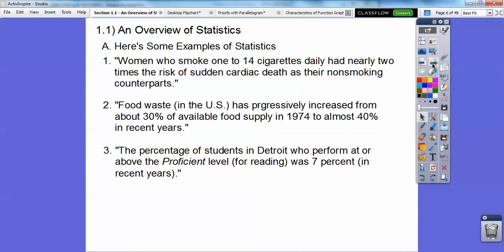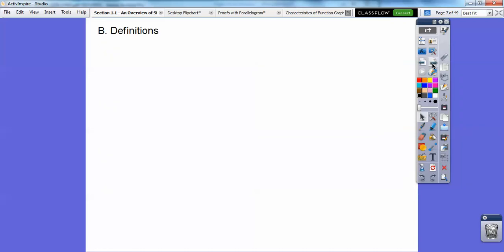Here's another one. Food waste in the United States has progressively increased from about 30% of available food supply in 1974 to almost 40% in recent years. The percentage of students in Detroit who performed at or above the proficient level for reading was about 7% in recent years. Those are just some examples, and statistics are used in our everyday life. In fact, statisticians have a pretty handsome salary because it is used everywhere.